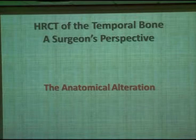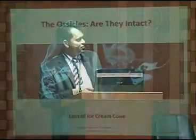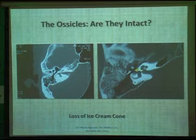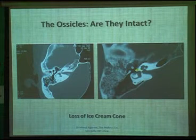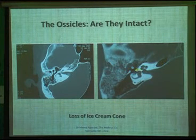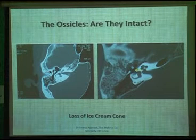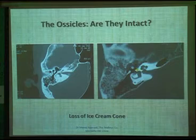That was a little bit about the anatomy. Now let's look at anatomical alterations we could encounter in day-to-day practice. We previously saw the classical ice cream cone appearance of the incudomalleolar joint as normal anatomy in the attic area. Now the incus and malleus appear intact, but the joint between them is missing, and there is soft tissue on the lateral aspect of the epitympanic area. This disruption of the ice cream cone appearance should give an inkling to the radiologist or otologist as to whether ossiculoplasty or any kind of ossicular reconstruction would be required in this patient.